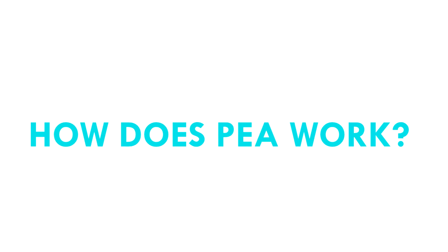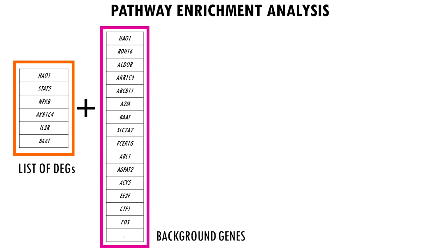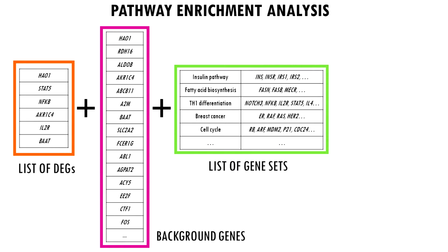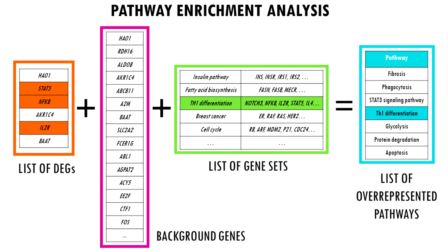Pathway enrichment analysis needs three ingredients. First, your gene list of interest — for example, a list of differentially expressed genes. Second, a list of background genes — for example, all the genes in the human genome. Finally, a list of gene sets, which are basically groups of related genes. The algorithm needs to know which genes are involved in breast cancer, apoptosis, or cellular respiration. What we do essentially is compare our gene list to the background list to check if certain pathways are overrepresented — for instance, if our list includes a lot of genes involved in T-cell differentiation.